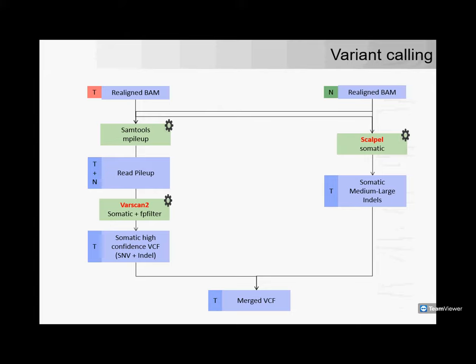For tackling medium to large size indels, I employed Scalpel. This is based on the concept of micro-assembly — for specified regions where I want to look for indels, it takes the sequence and does a de novo micro-assembly rather than realigning to the reference. That's an alternative way of picking up indels. In my experience, it has been fairly useful for picking up challenging or difficult indels. Once all variants are identified and represented in the VCF file, they are merged carefully to make sure overlapping variants are not overwritten or lost.